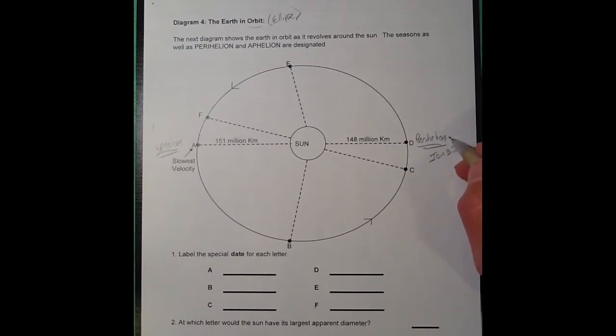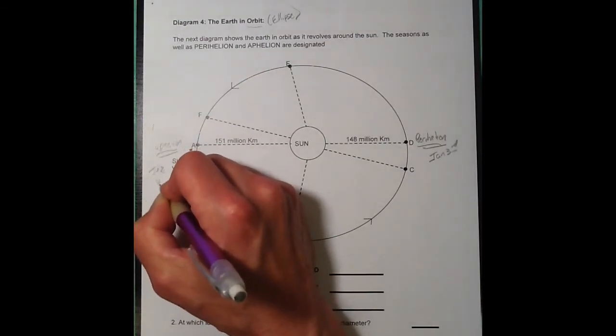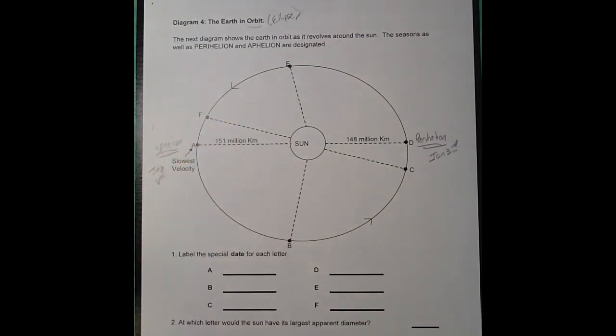Now, aphelion, when we're most distant from the sun, is actually in our summer months. This one is sort of easy to remember because aphelion is around the 4th of July.